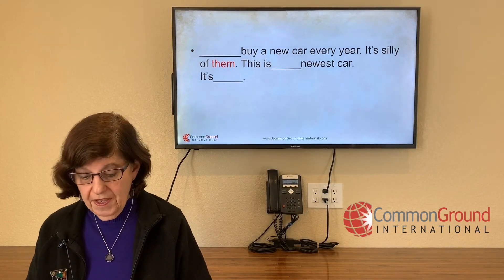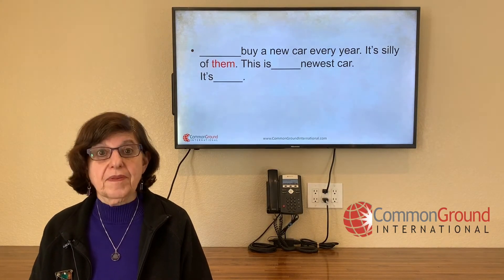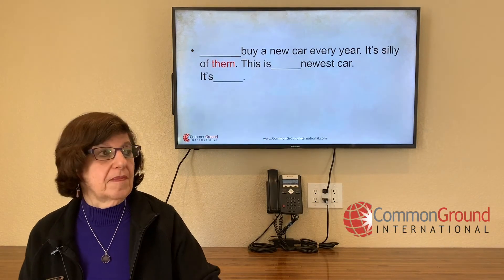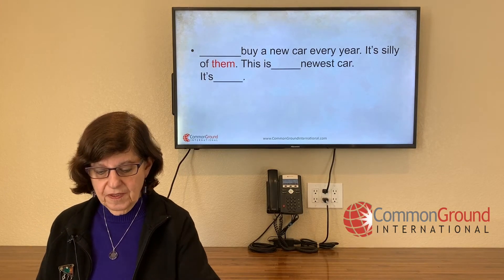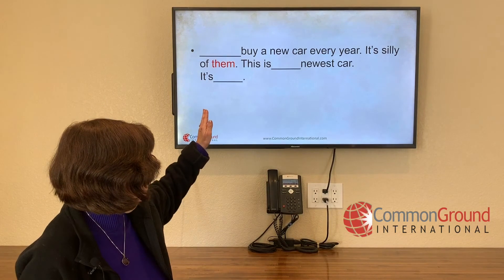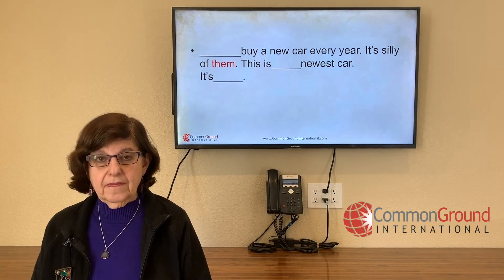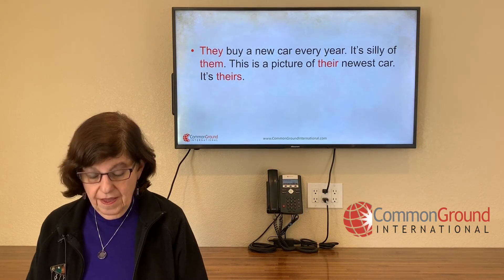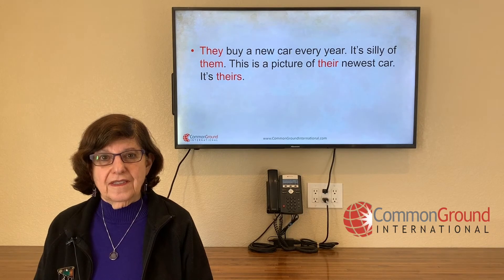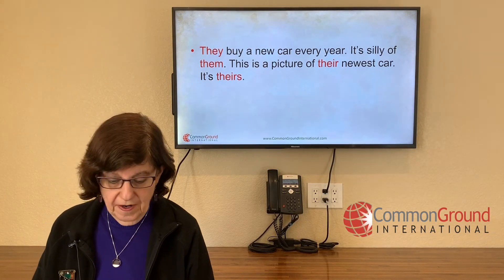'Blank buy a new car every year. It's silly of them. This is blank newest car. It's blank.' We're talking about them — third-person plural. You want subject, I gave you the object, you want possessive adjective and possessive pronoun. 'They buy a new car every year. It's silly of them. This is a picture of their newest car. It's theirs.'